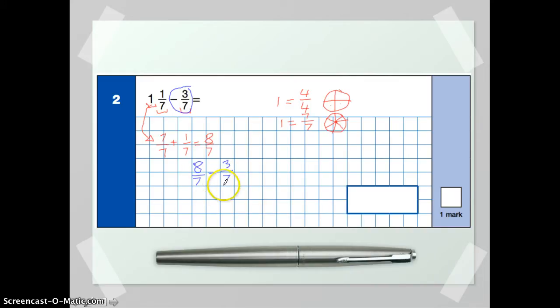Now, because the denominators are the same, it's as if we're using the circle, which is still split up into seven pieces. So if we've got eight of those pieces, subtract three of them, we're simply going to do eight subtract three.